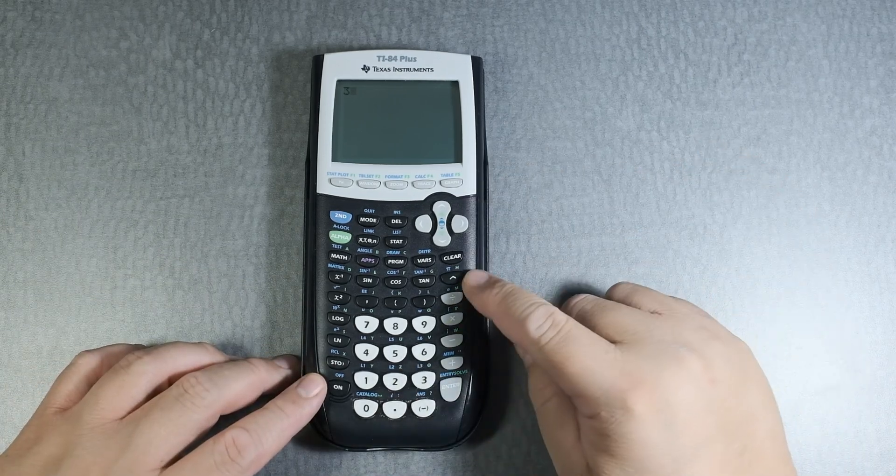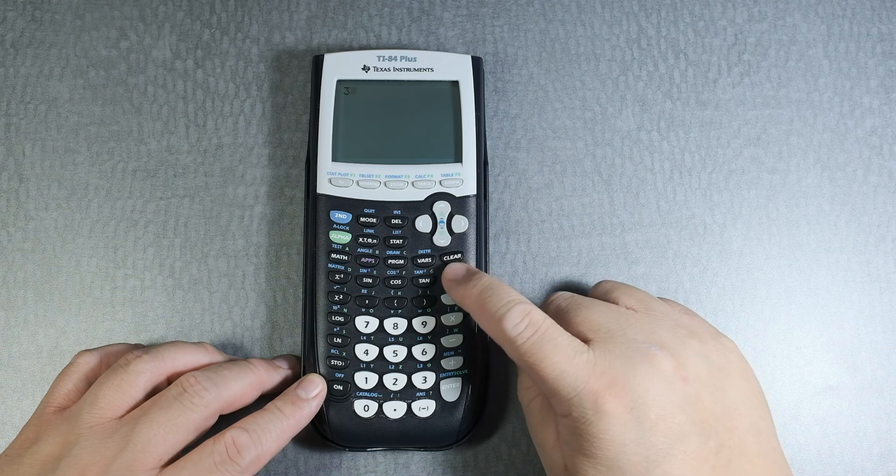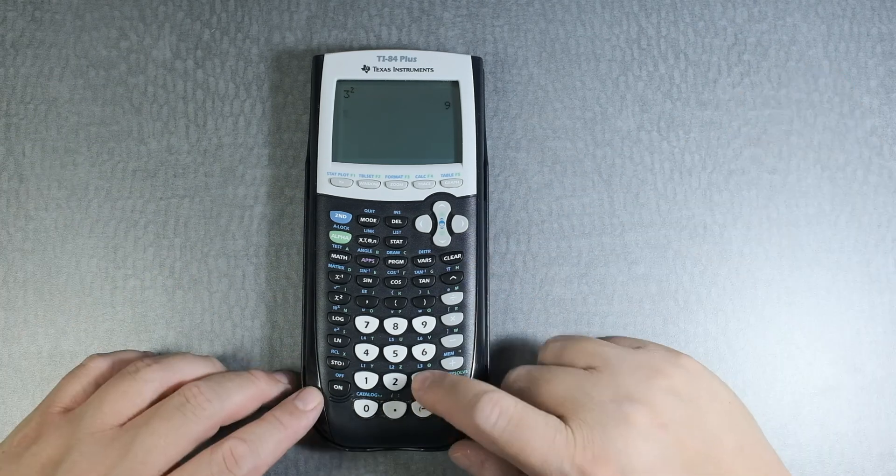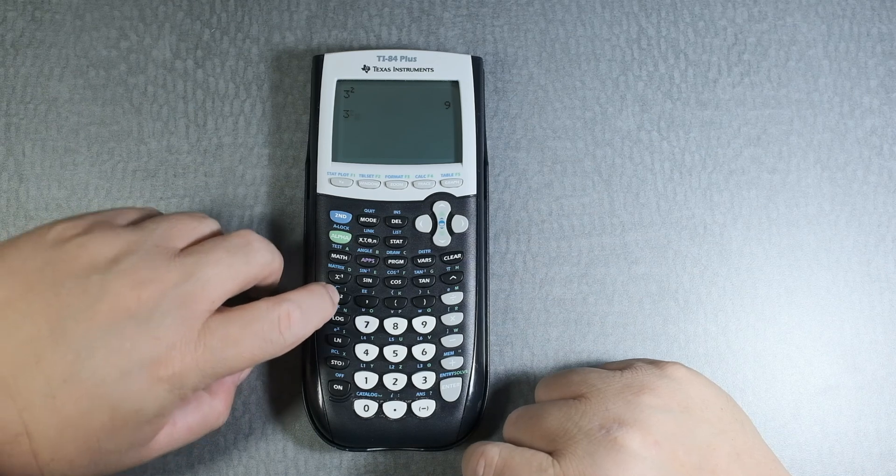Let's say we want to do 3 squared. We can use the caret key, 2, 3 squared gives you 9, or 3 and then this button here, squared.